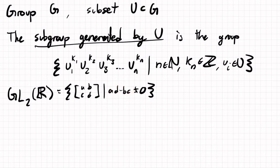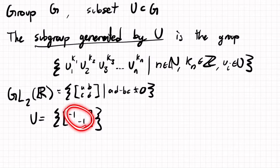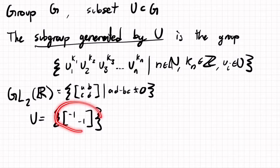Let's make U be the set containing just one element: the matrix with -1 on the diagonal. This is a diagonal matrix, and multiplying it by itself will commute.